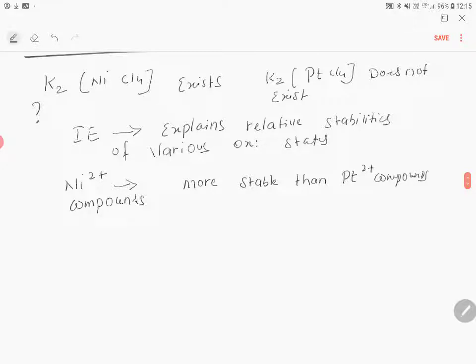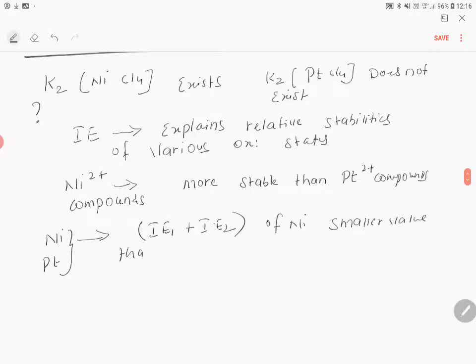Once again, what is the reason for this? Comparing nickel and platinum, ionization energy one plus ionization energy two for nickel has a smaller value than platinum.